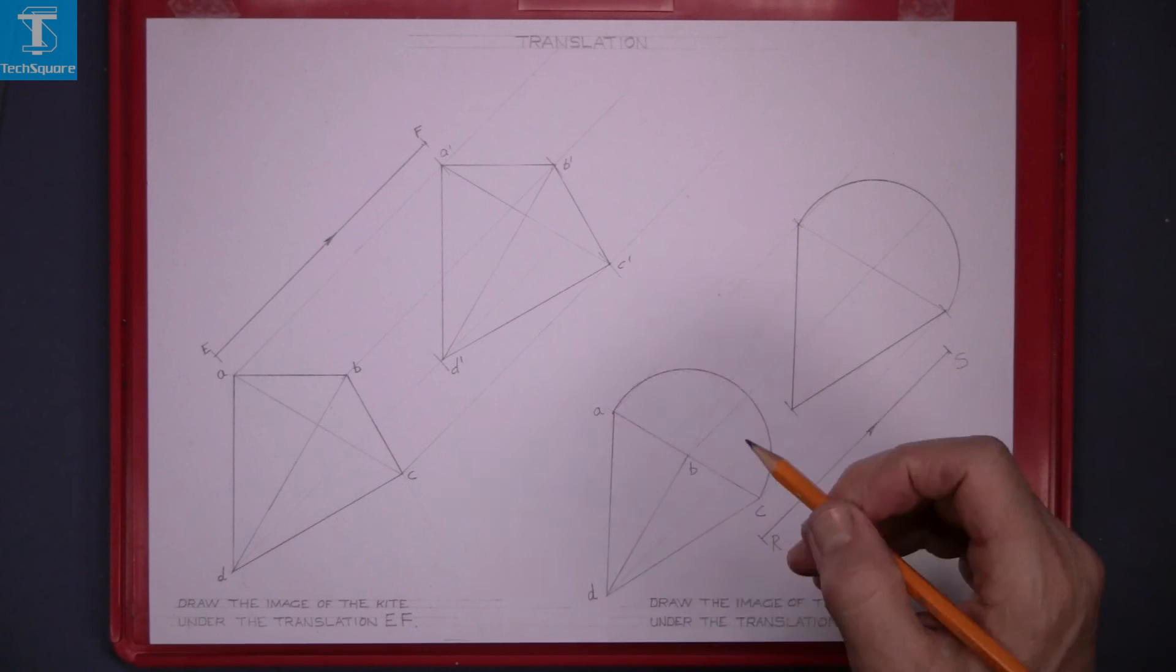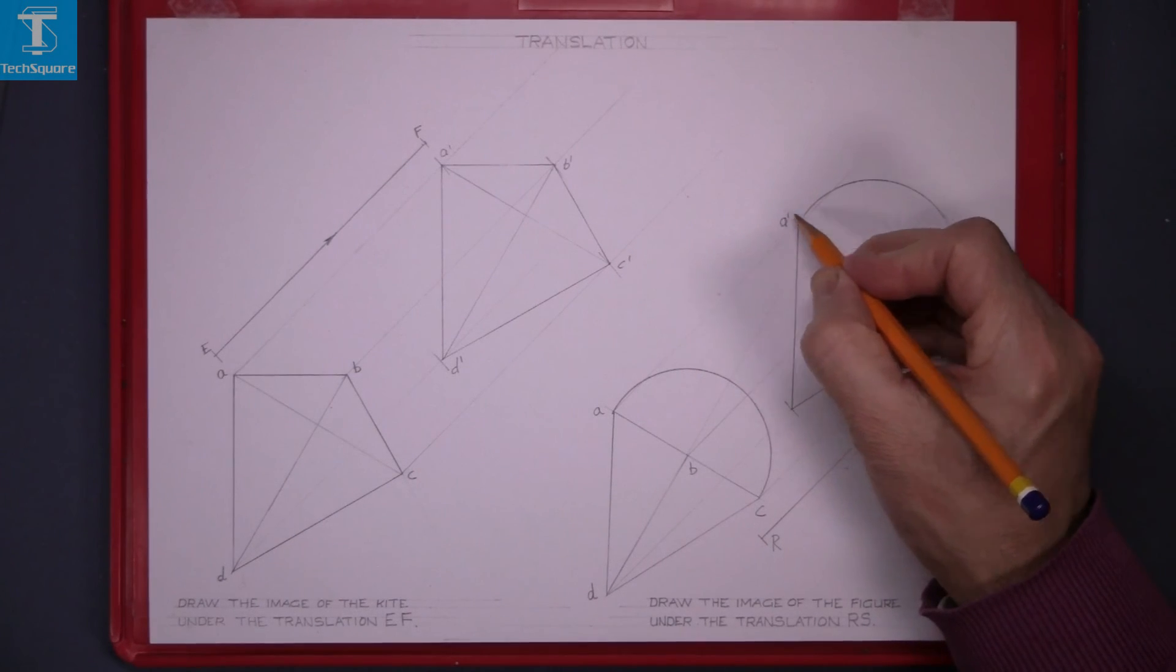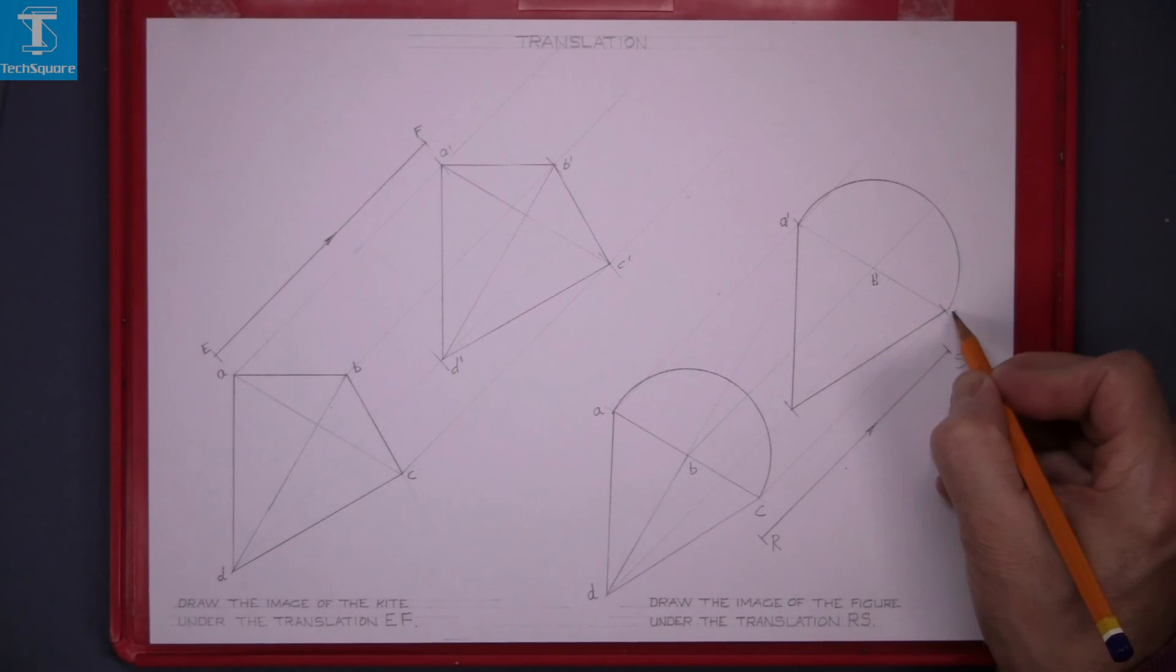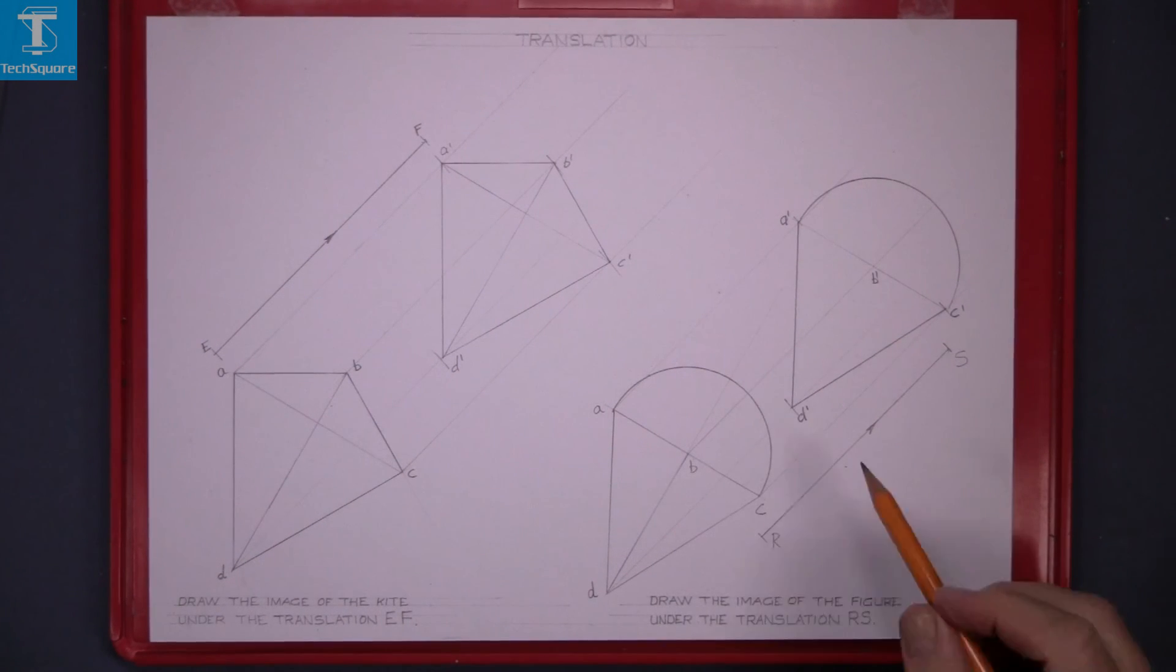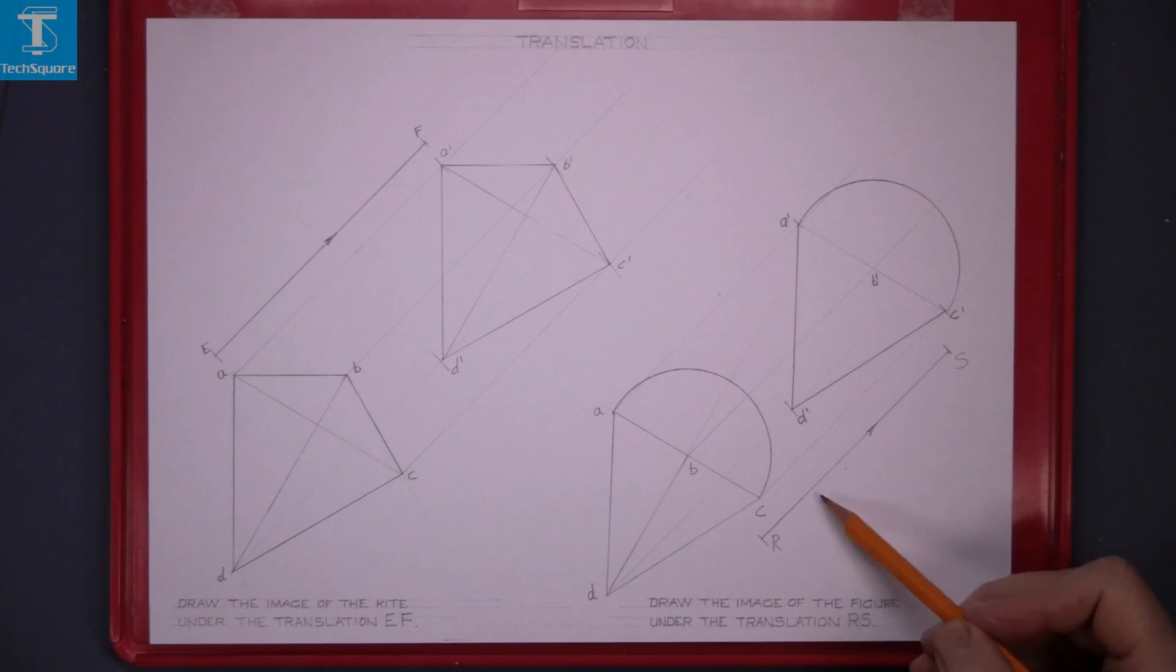And now index the points A1, B1, C1 and D1. And that's the image under translation RS.